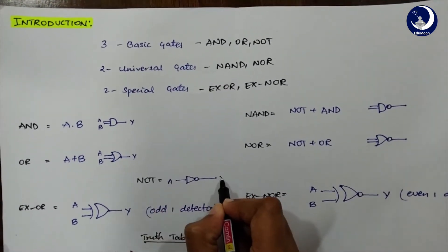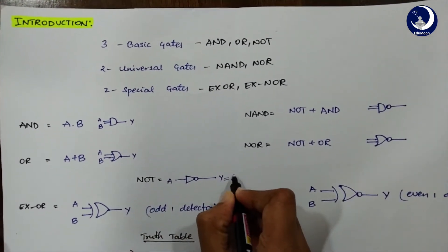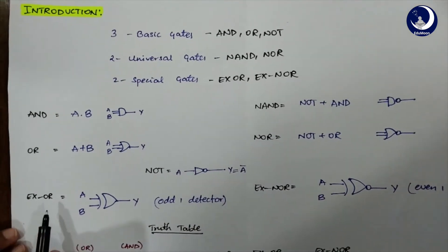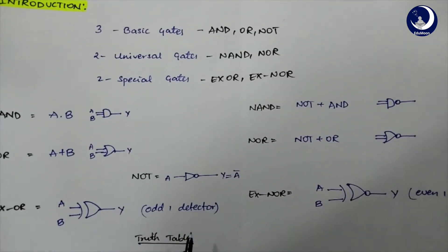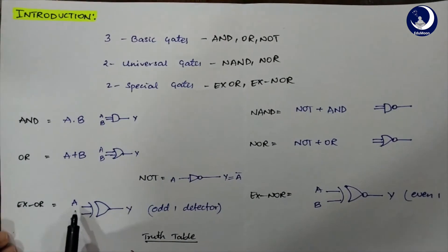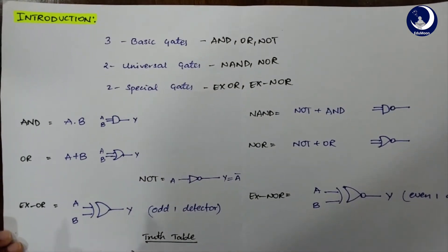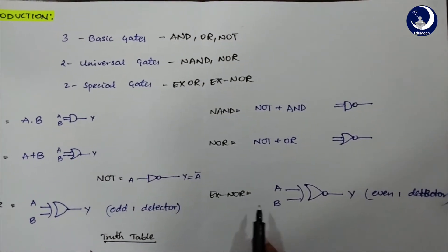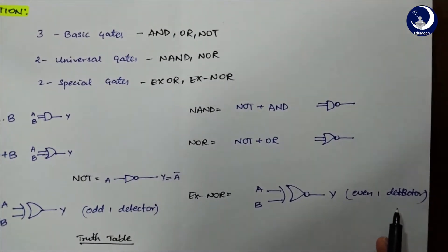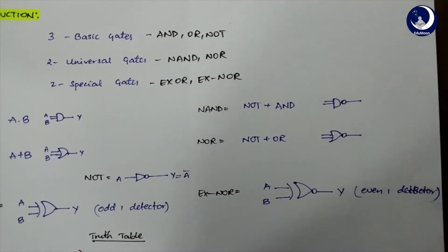So if this is input A and this is Y, your output Y can be A bar. Now XOR — XOR is basically an odd-one detector gate. The representation of this gate is as follows. Now XNOR — XNOR is basically an even-one detector gate. This is the representation of the XNOR gate.